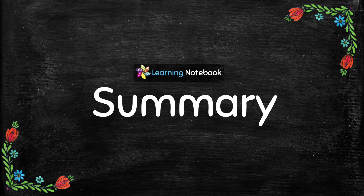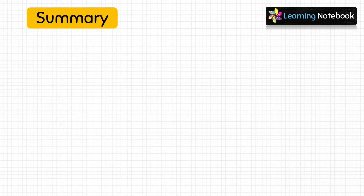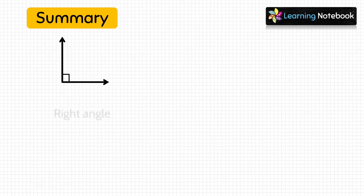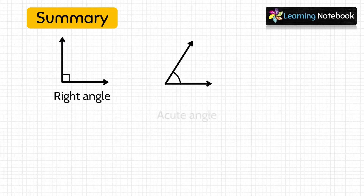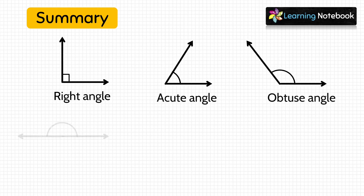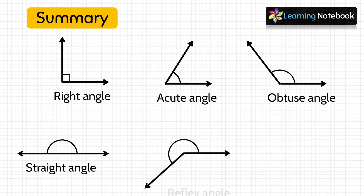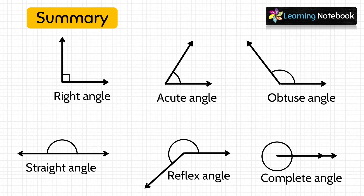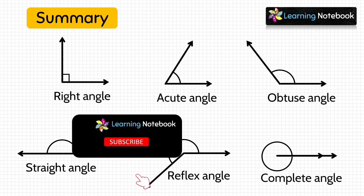Now let's summarize what we have learned. We learned 6 types of angles in this video: right angle, acute angle, obtuse angle, straight angle, reflex angle, and complete angle.